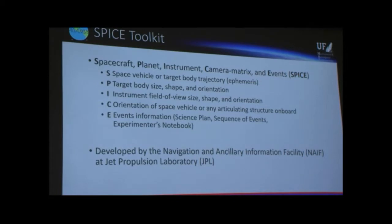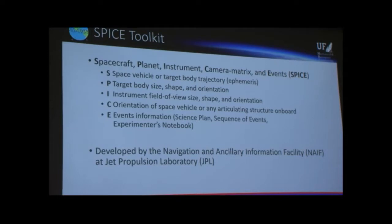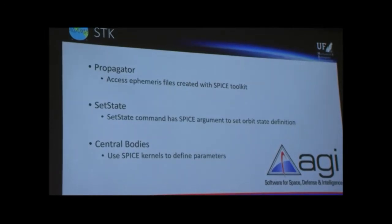The 'P' in SPICE gives you information on the gravitational parameters and the radius of any one of these bodies. Frame information — so they use the J2000 frame as the standard Earth-based inertial frame, which is the same ECI frame we talk about in class. The 'I' section covers spacecraft-specific items like instrument field of view and size. The 'E' for Events is not really necessary for our applications — basically selective information about satellite orbits and missions.